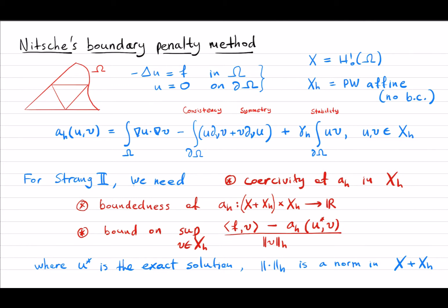For example, just say piecewise affine functions. Because of this curved boundary, if you look at a piecewise affine function on this curved triangle which is zero on these two vertices, then that will be zero along this straight edge, but in general it's not going to be zero on the curved boundary part. So we're going to impose the boundary condition on this curved part by some kind of penalty term.